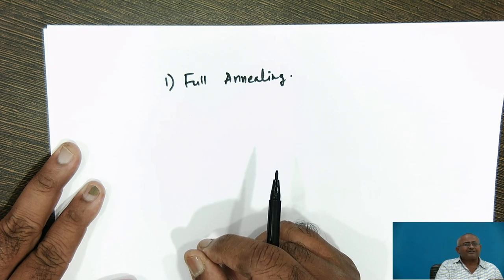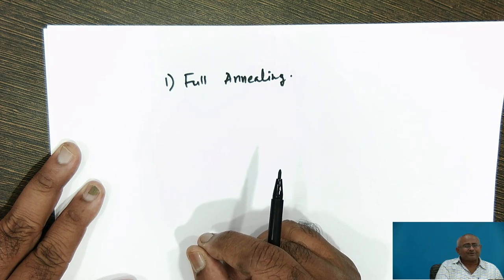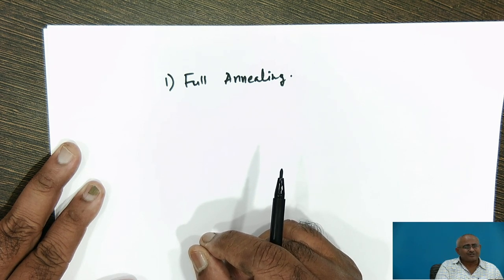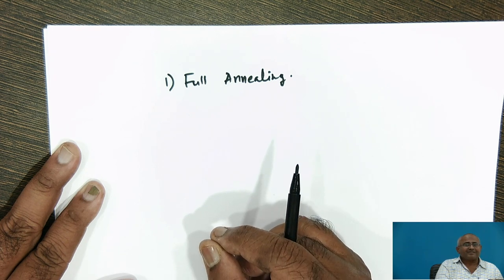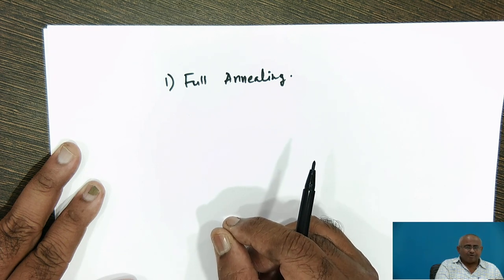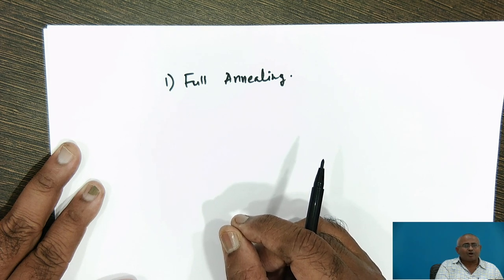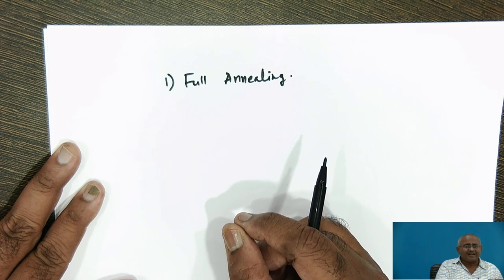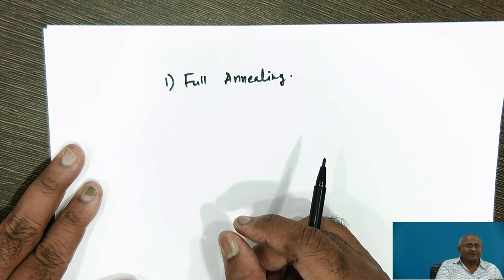Except improving machinability of hypereutectoid steel and tool steel, and except homogenization, all other purposes can be solved by full annealing. That is why this treatment is called full annealing treatment.